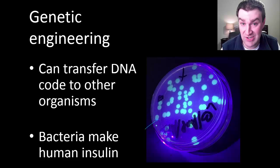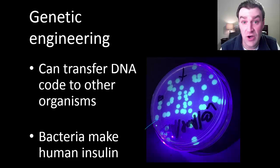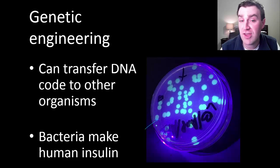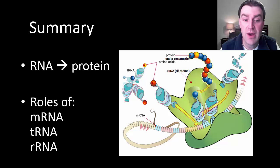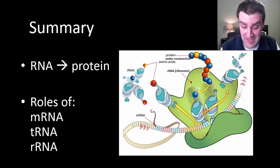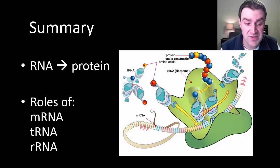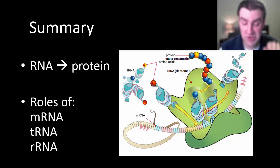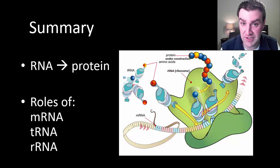We can make bacteria do useful things too. If you know any diabetics that take insulin, almost all of the insulin is now made by bacteria engineered with the human DNA code for insulin. In brief summary, we talked about how the RNA code is translated into a sequence of amino acids that makes up a protein, and we saw that three RNAs each play a distinct role in the process of building the protein.